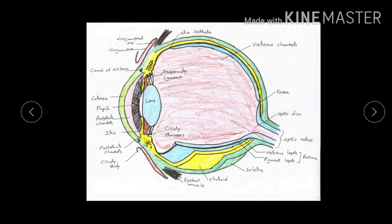The fovea is visible here, along with the chamber containing the vitreous material, the position of the optic disc, and the optic nerve. There is also a canal known as the canal of Schlemm at the corneoscleral junction, mainly useful for drainage of aqueous humor into the venous system. The muscles of the eyeball attach to the sclera for eye movements, and the conjunctiva and conjunctival sac are also visible. This concludes the brief overview of the structure of the eyeball.